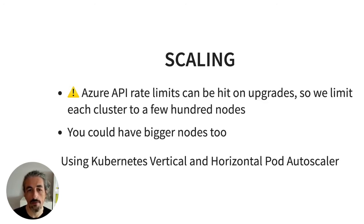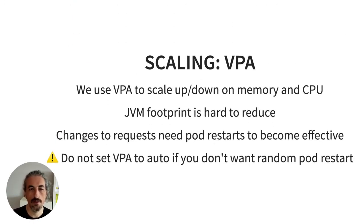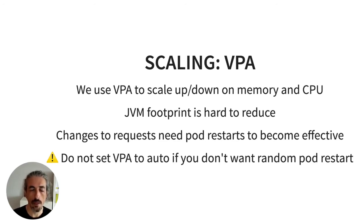You could also solve this by using bigger nodes to get larger cluster sizes with the same node count. We use the Kubernetes Vertical and Horizontal Pod Autoscalers extensively. For the VPA we scale memory and CPU up and down, but JVM footprint is hard to reduce — you set the heap size at startup and the JVM manages that memory. One important caveat: changes to resource requests require pod restarts to become effective, so don't set VPA to automatic mode or you'll get unexpected random pod restarts.